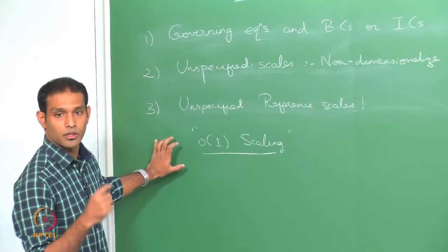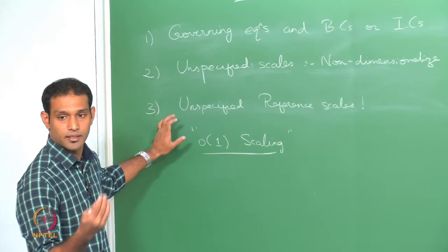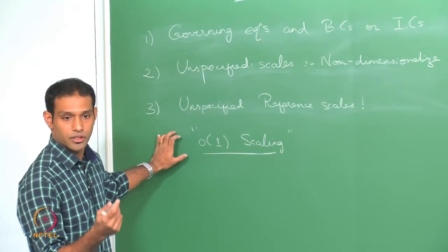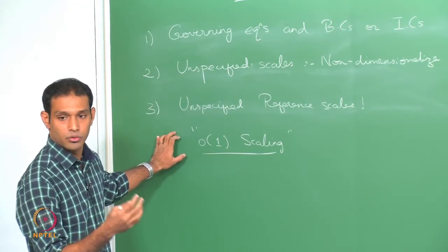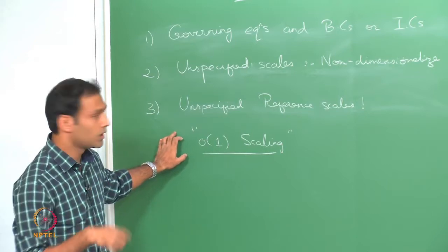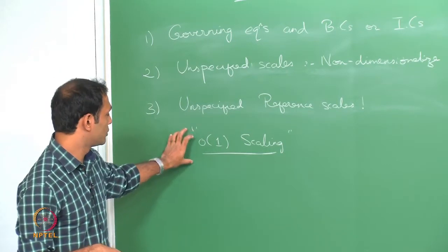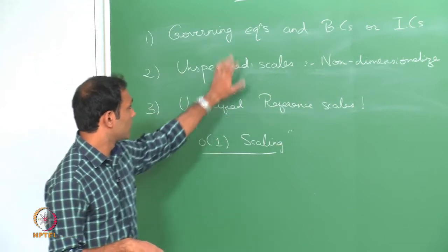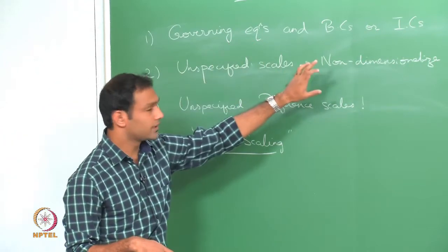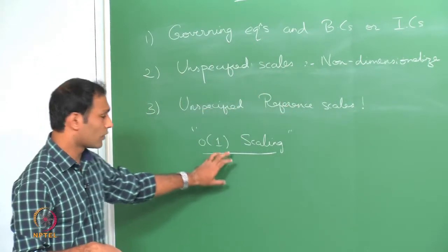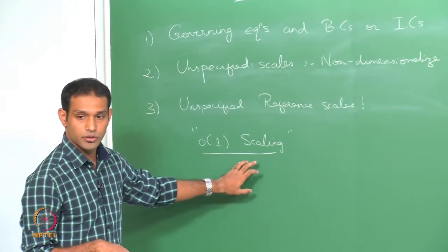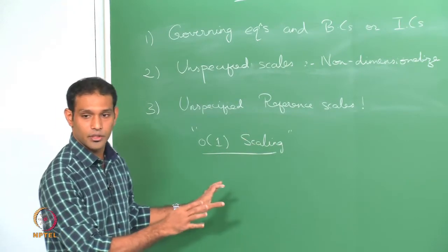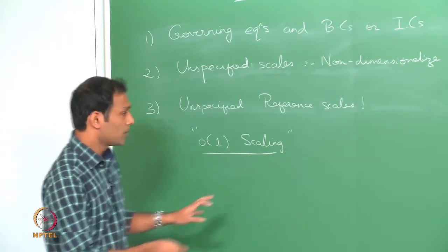You could non-dimensionalize with any velocity — the velocity of the Earth, the Moon, anything — but we choose a velocity that makes the equations, boundary conditions, and initial conditions all of order 1. This physically tells you the unique scales to choose for different variables, and that is what we will be looking at in today's class.